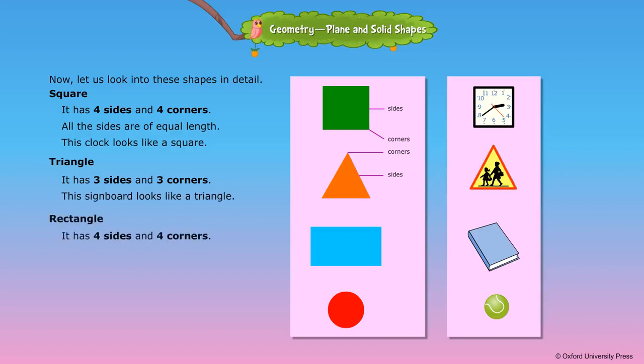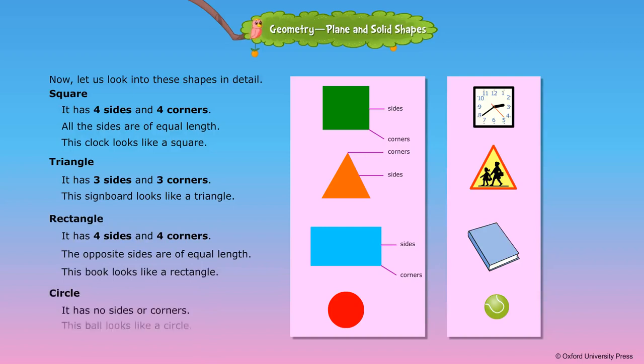Rectangle: it has 4 sides and 4 corners. The opposite sides are of equal length. This book looks like a rectangle. Circle: it has no sides or corners. This ball looks like a circle.